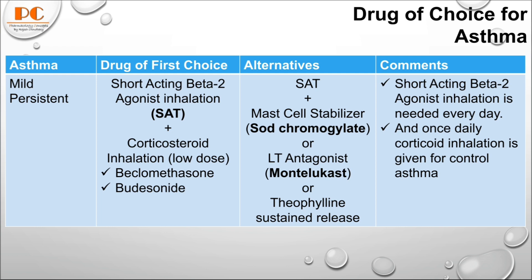For the alternative in mild persistent asthma, we can use a short-acting beta-2 agonist like salbutamol, albuterol, and terbutaline, plus a mast cell stabilizer like sodium cromoglycate or nedocromil, or a leukotriene antagonist like montelukast or zafirlukast.